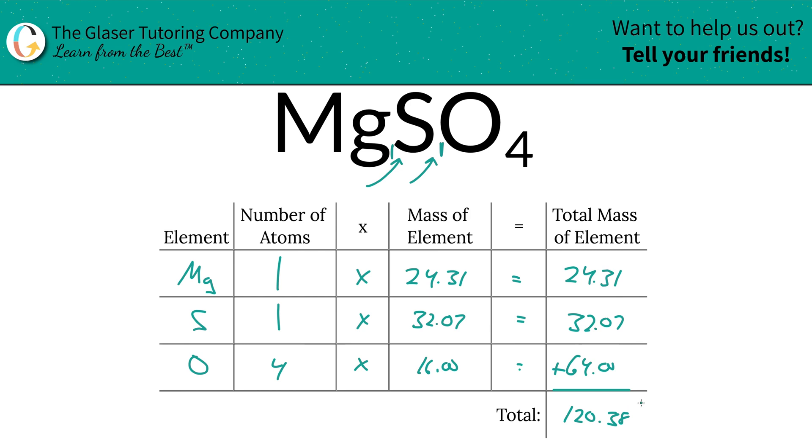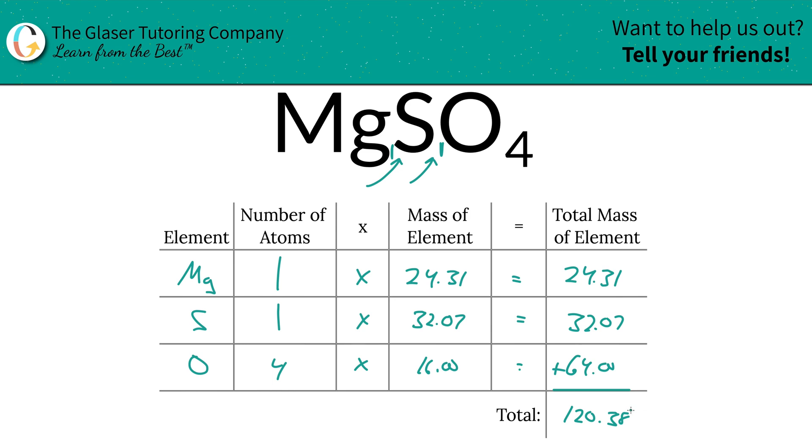Now what I'm going to do is I'm going to add a column. Watch how simple this is. So to find the percent of magnesium, we're going to simply take the total mass of that magnesium, 24.31 units of mass, divided by then the total mass of the entire compound. That's why we had to calculate that first. So then we're going to simply take that fraction, multiply it by 100 to get it into a percent, and it's simply going to be 20.19 percent for magnesium.